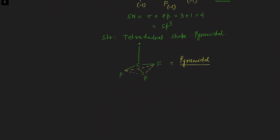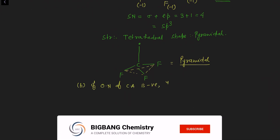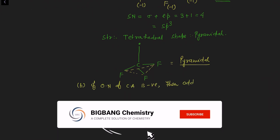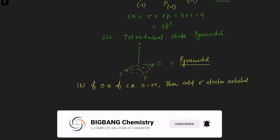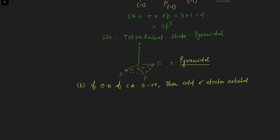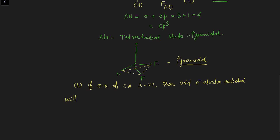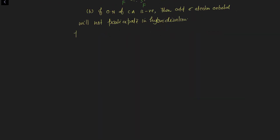Now case number one, second part B: if the oxidation number of the central atom is negative, then the odd electron orbital will NOT participate in hybridization.